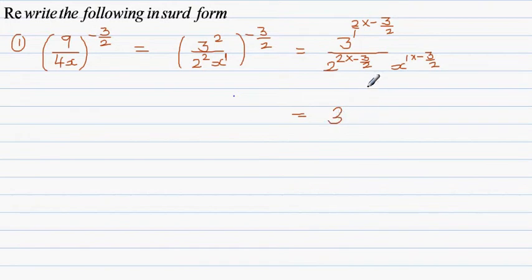Over - the same thing: 2 times negative 3 halves is going to be 2 to the power negative 3.